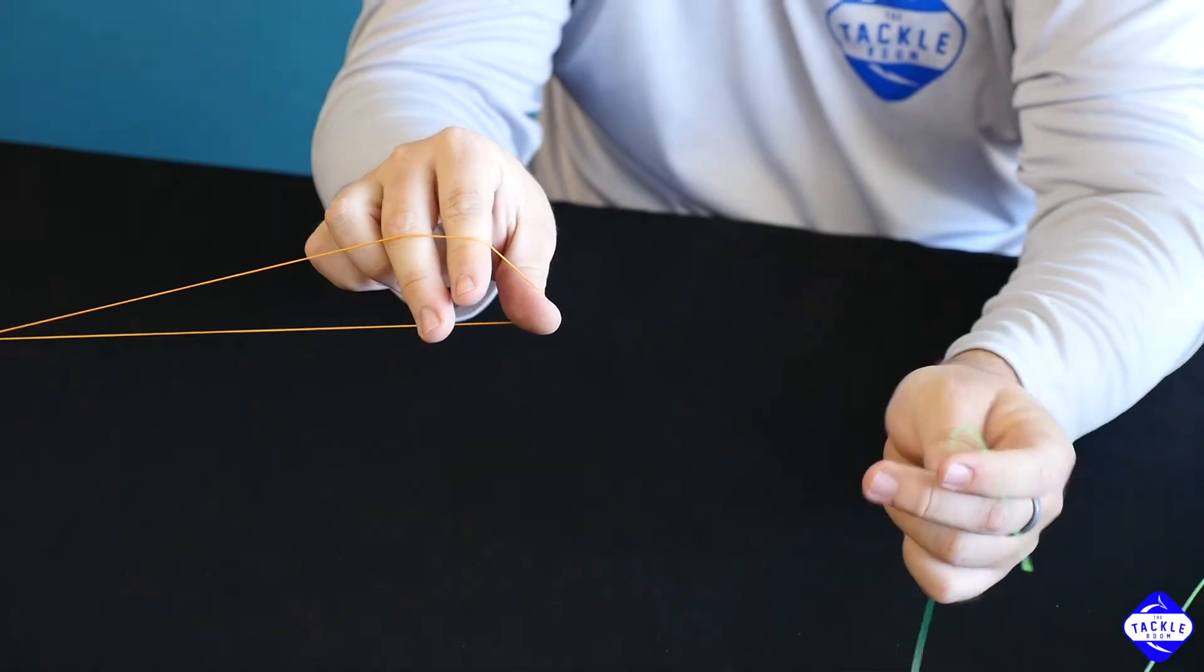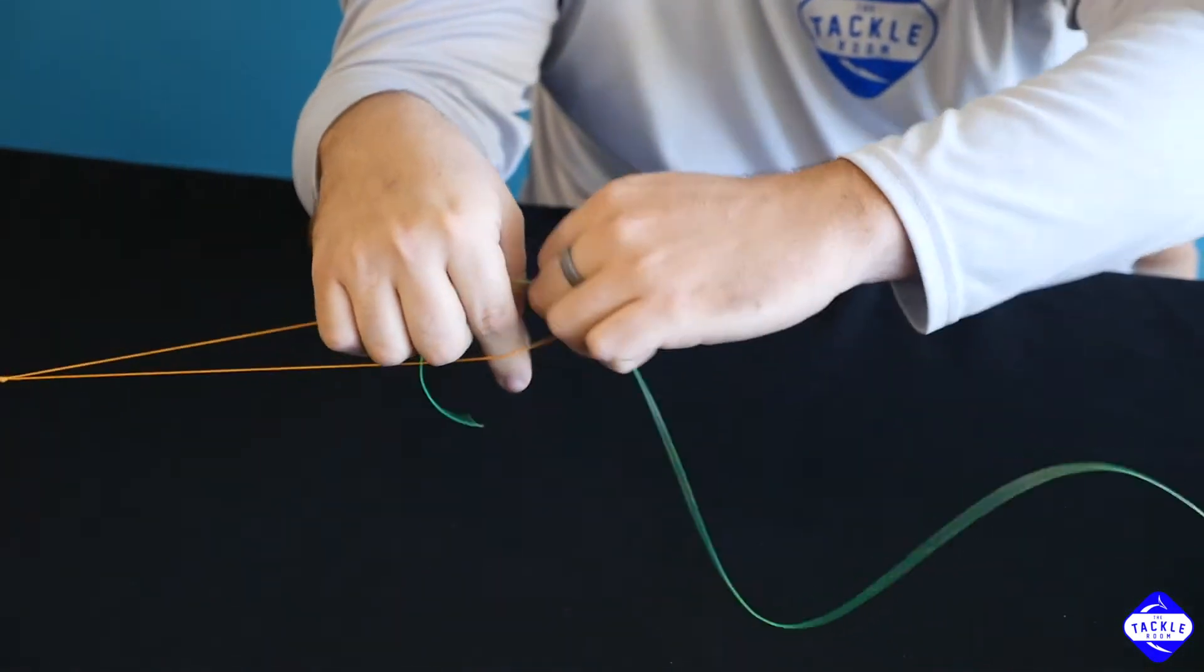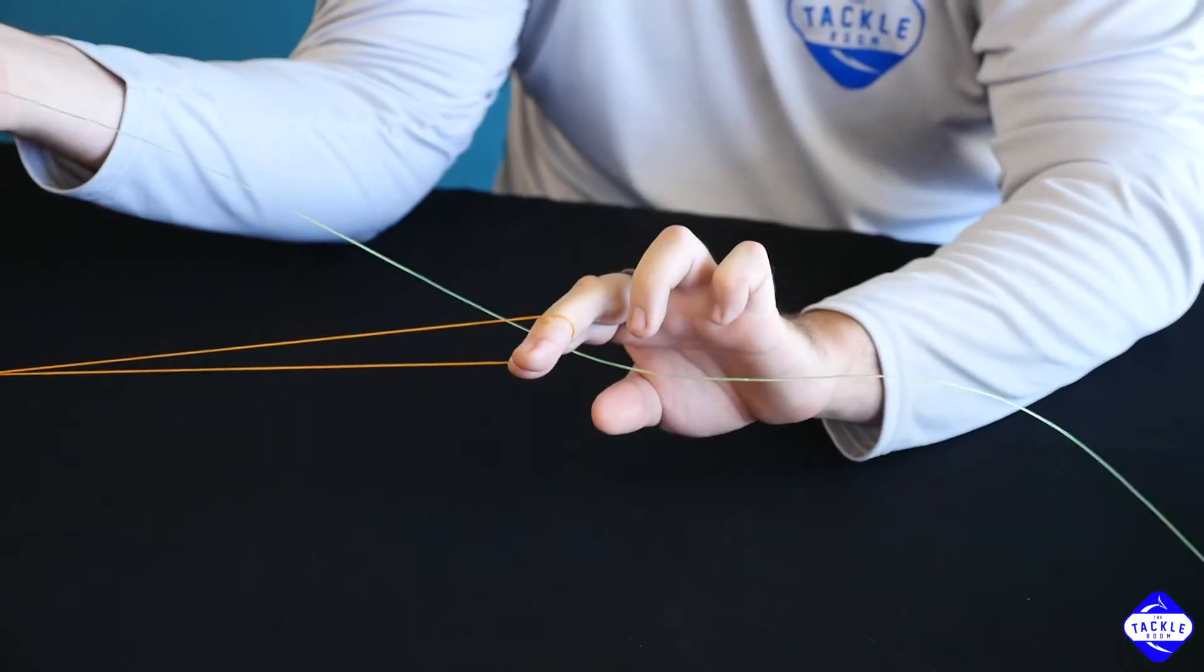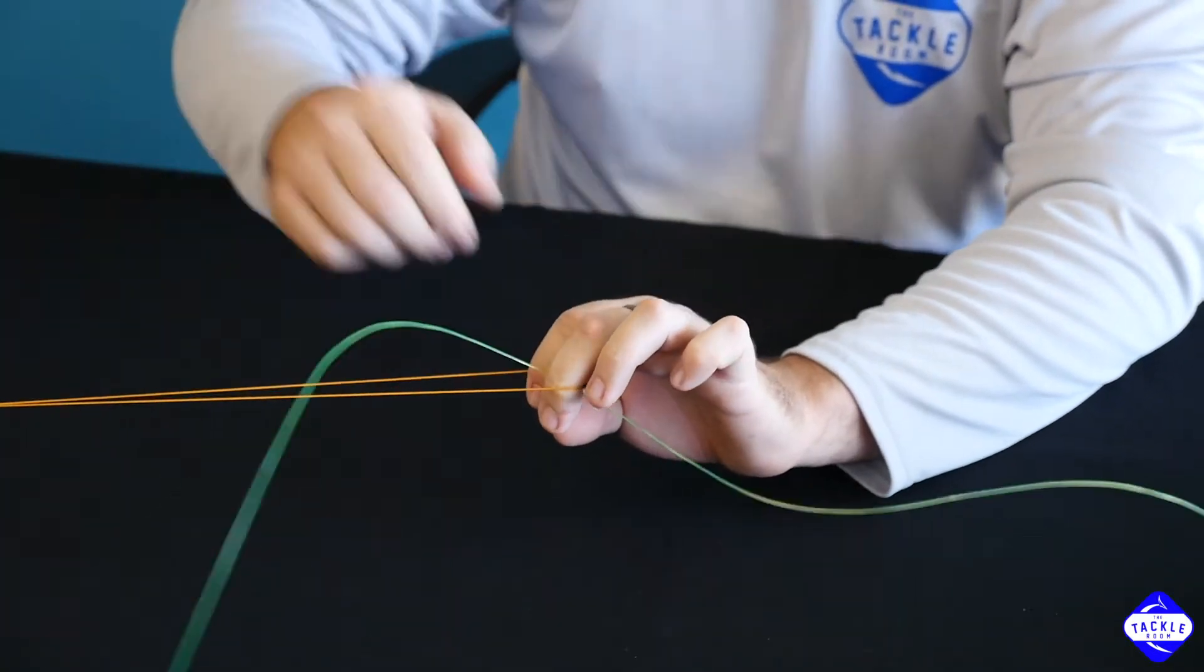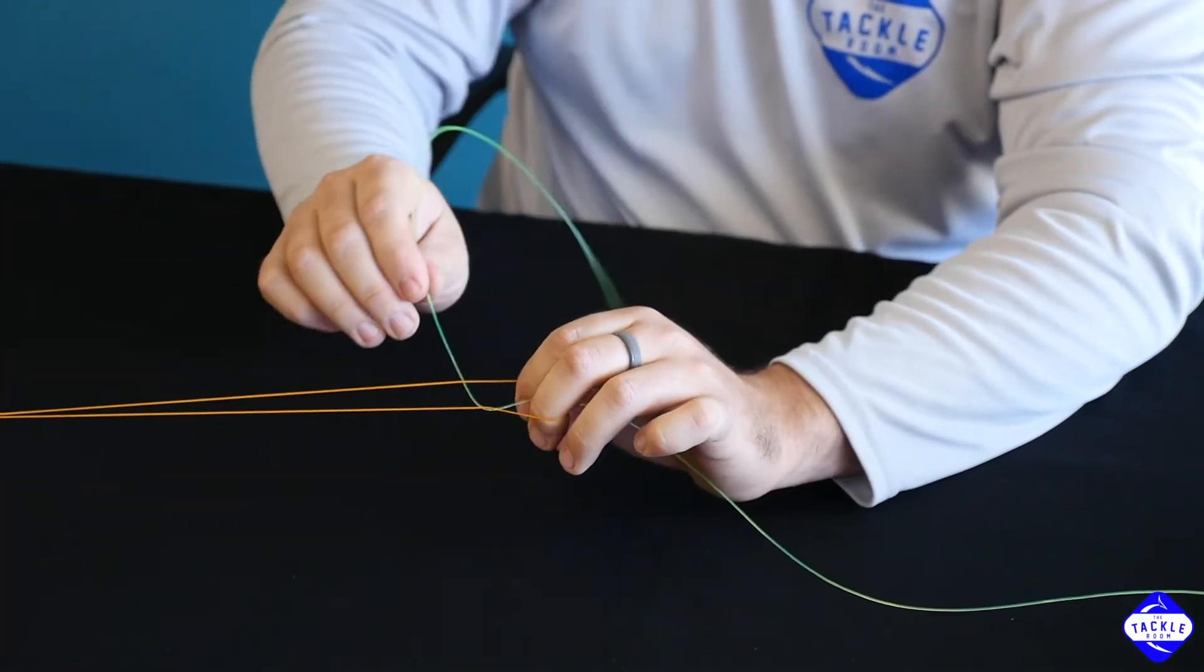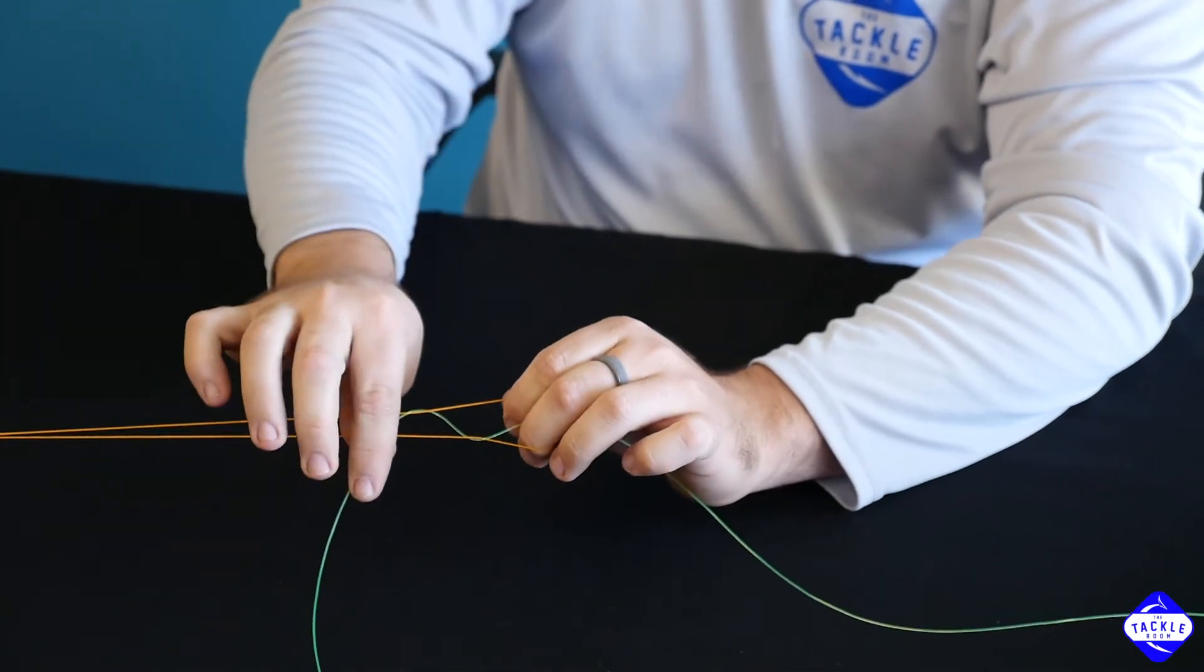Start off by going through the loop of the triple overhand knot. And I like to put about a foot out and pinch it with my fingers. All you have to do is start taking your tag end and wrapping around both pieces of the braid.